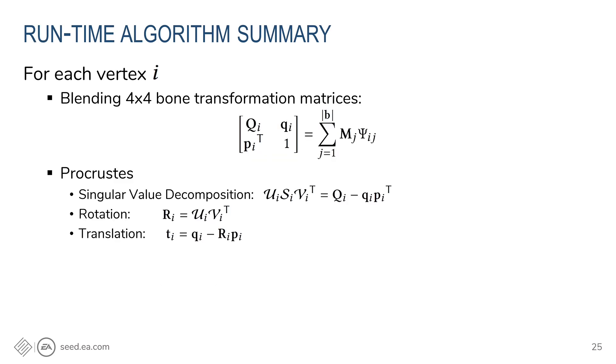And once we have the pre-computed multi-weight matrices psi, the runtime algorithm is straightforward. We need to blend input bone transformation matrices M_j with weights psi_ij. And the result here is one 4 by 4 matrix, and we can use these sub-blocks q and p to solve the Procrustes problem. Here we use singular value decomposition to solve for the rotation matrix R_i, and then use the rotation to compute the translation vector t_i. So this algorithm will give the high-quality deformation quality. However, it could be a bit expensive depending on the implementation of the 4 by 4 matrix operators and the 3 by 3 singular value decomposition.